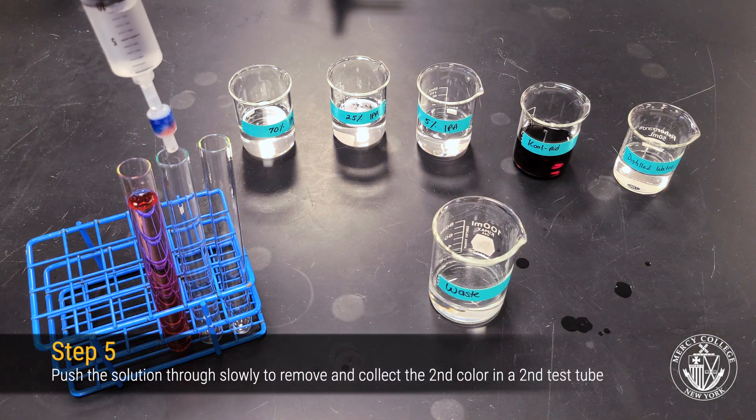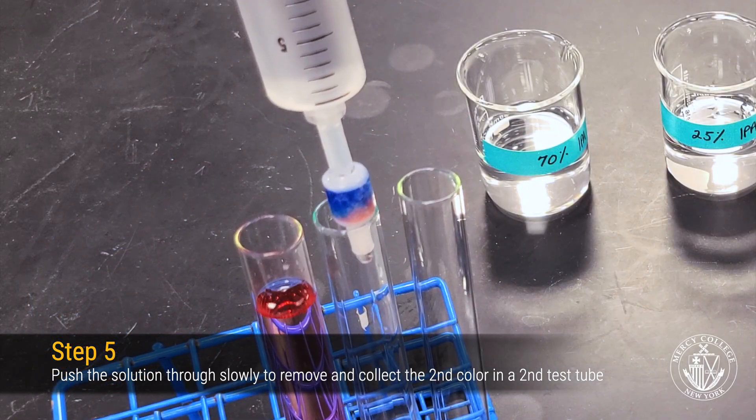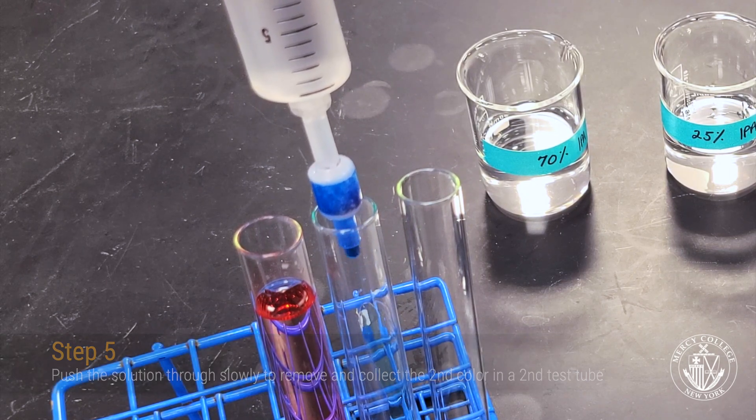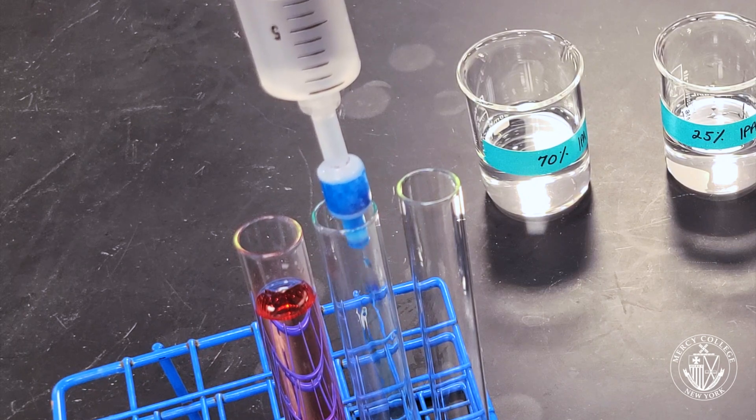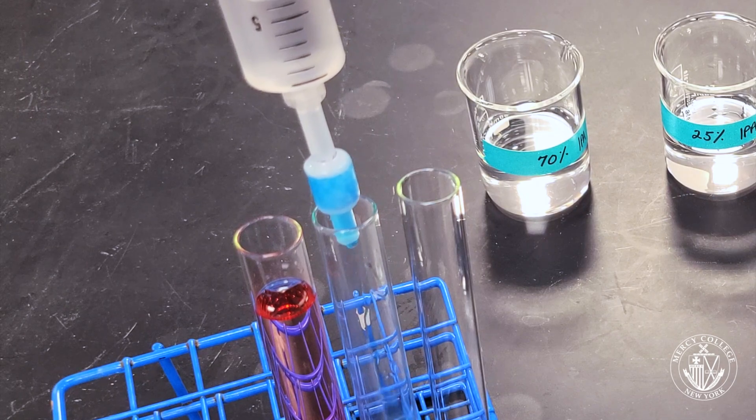Slowly push the 25% IPA solution through the column in order to remove the blue dye. Continue collecting the elutant until you've fully removed the blue dye from the column. Proceed slowly as you push liquid through the column, being careful not to apply too much pressure or to damage the column.